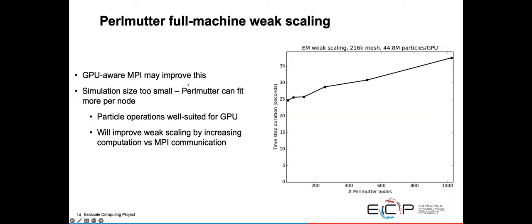We've also scaled Perlmutter up to 1,000 Perlmutter nodes. This is our weak scaling. It's not as good as on Summit. I think there are a number of ways we can improve it going forward with GPU-aware MPI and putting more particles onto each node, basically packing a larger problem size than we had been doing. This is key because particle operations are well suited for the GPU. They're well optimized and we need to get a lot of particles on each GPU. By increasing the amount of computation versus MPI communication, that can also improve the weak scaling.